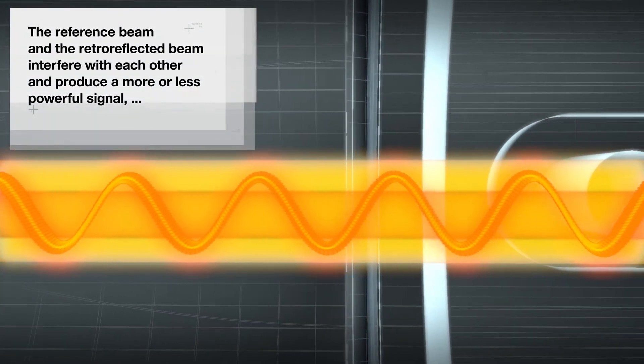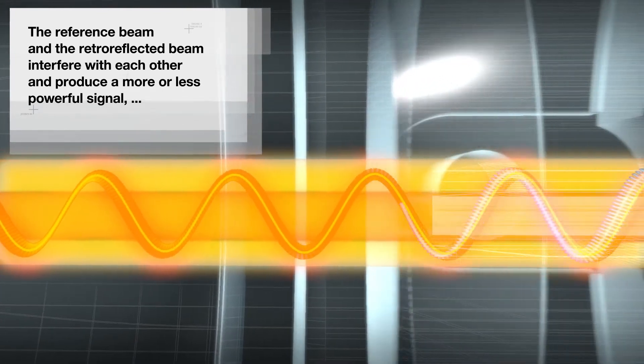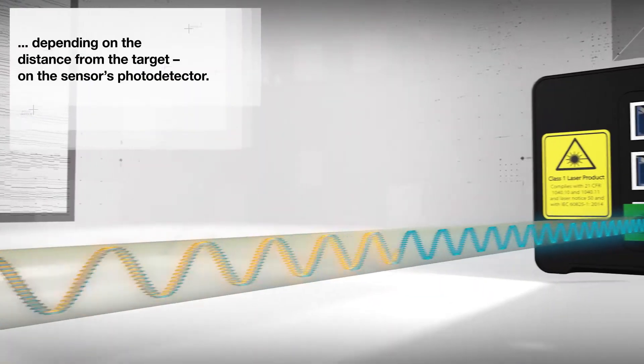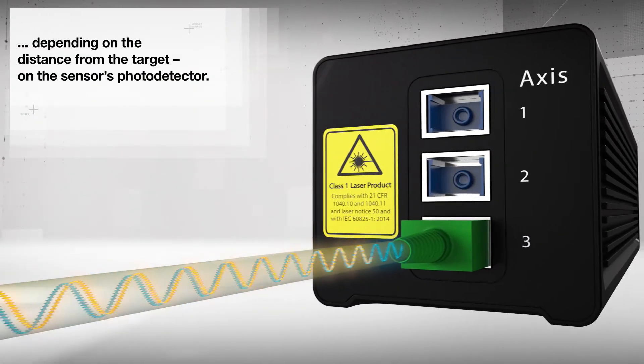The reference beam and the retro-reflected beam interfere with each other and produce a more or less powerful signal depending on the distance from the target on the sensor's photo detector.